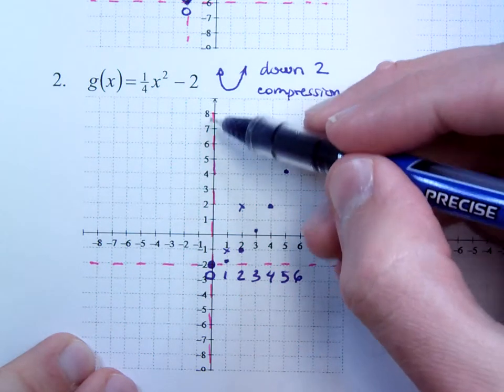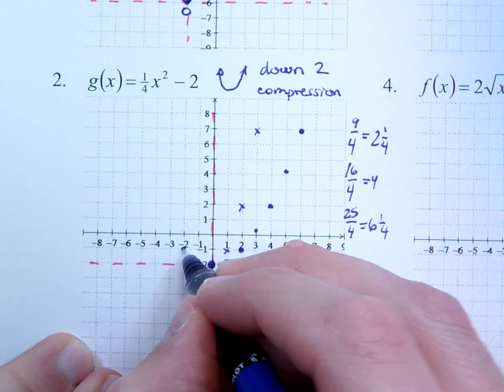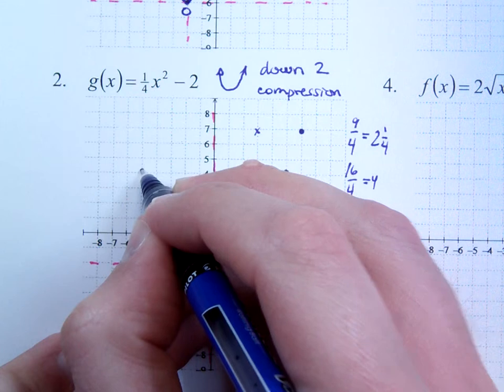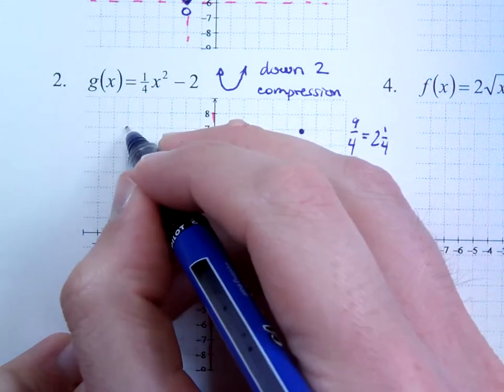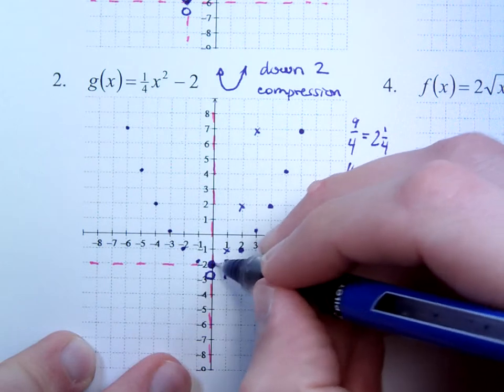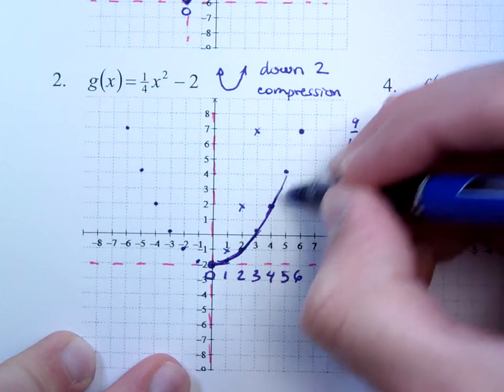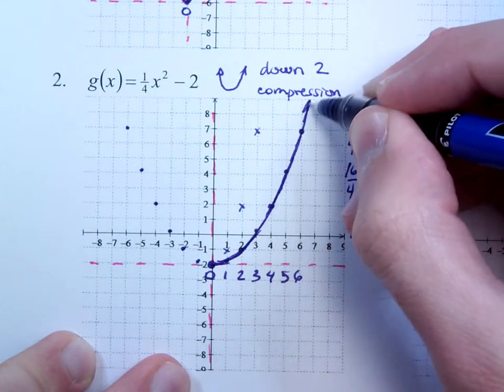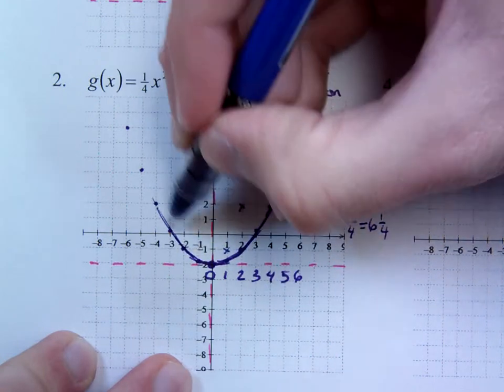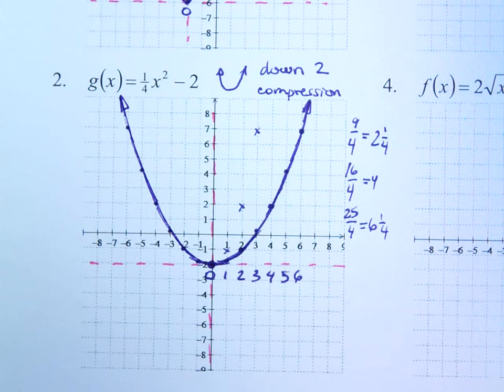You have this axis of symmetry, so reflect these back over. Here's the 1/4, the 1, 2 and a fourth, 4, 6 and a fourth, 9. And you make your nice parabolic shape here. Remember, this is a parabola. It curves. It is not made up of straight segments. So there's your parabola.